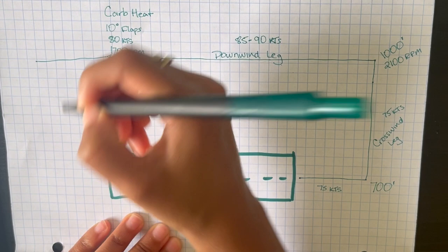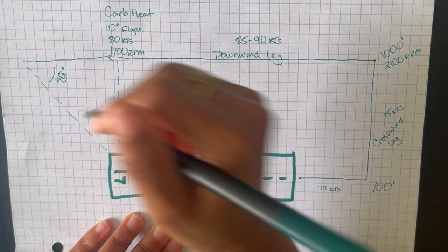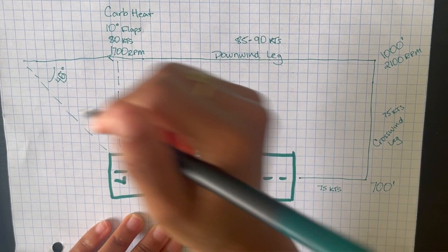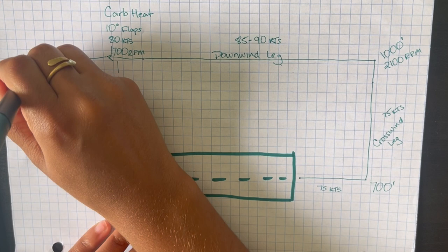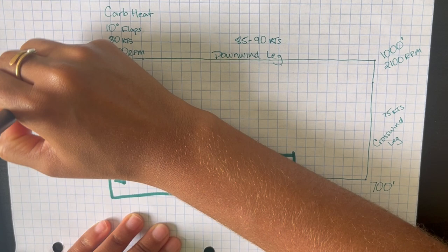When you are about 45 degrees in front of and to the right of the runway, you are going to prepare for your next turn onto your base leg. Once you turn onto your base leg you are going to continue descending, but now you are going to maintain about 75 knots and you're going to put 20 degrees of flaps in.